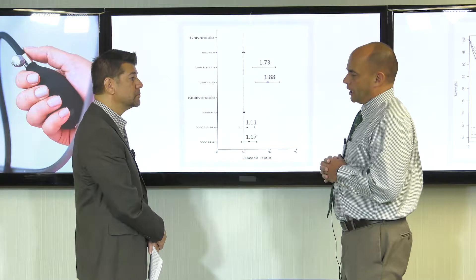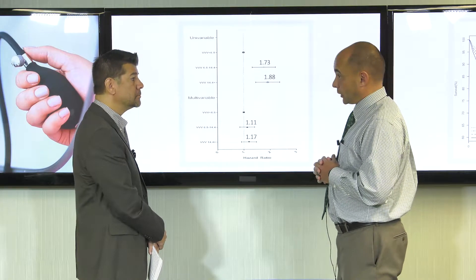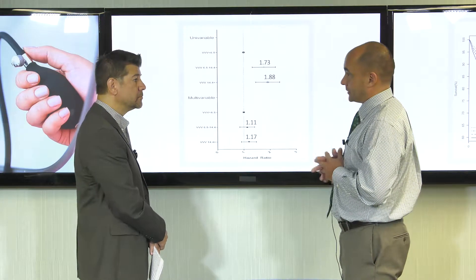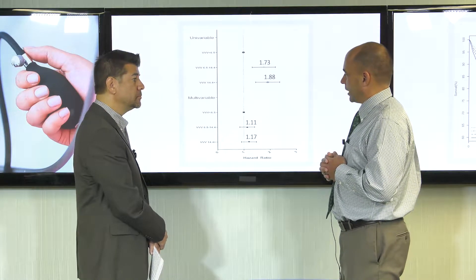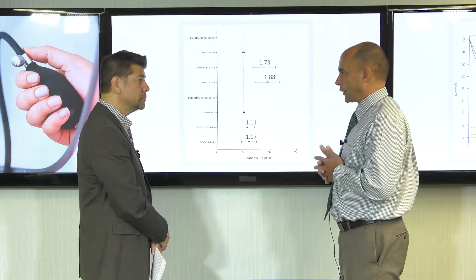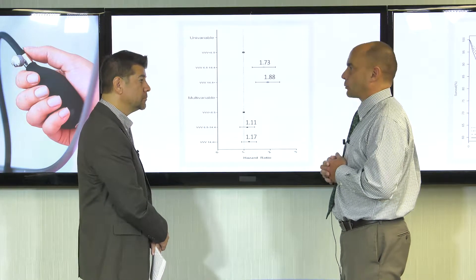When we applied the ALLHAT study to our database by itself, visit-to-visit variability was a predictor. But when we did 20 comorbidities and 29 plus medications, it lost its statistical significance, which was interesting to us. That made us reflect on why that was and where to go with this data. It made us ask more questions.